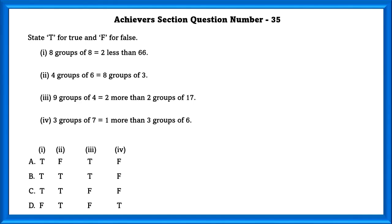Question number 35: State T for true and F for false. Statement 1: 8 groups of 8 equals 2 less than 66 — 8 groups of 8 is 64, which is indeed 2 less than 66, so true. Statement 2: 4 groups of 6 equals 8 groups of 3 — both equal 24, so true. Statement 3: 9 groups of 4 equals 2 more than 2 groups of 17 — 9 into 4 is 36, and 2 into 17 is 34, so true. Statement 4: 3 groups of 7 equals 1 more than 3 groups of 6 — 3 into 7 is 21, and 3 into 6 is 18, so 18 plus 1 is 19, not 21 — this is false. The answer is B.